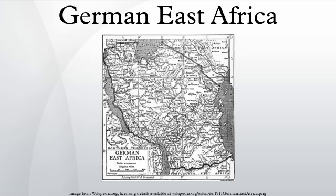The colony was organized when the German military was called upon to put down a revolt against the activities of a colonial company during the late 1880s. It ended with Imperial Germany's defeat in World War I. Afterwards, the territory was divided between Britain and Belgium and reorganized as a mandate of the League of Nations.